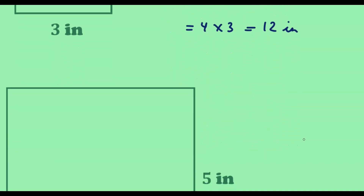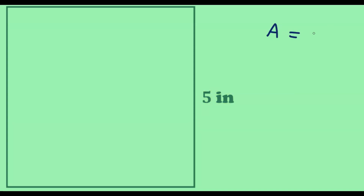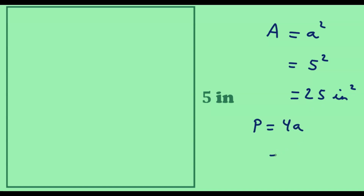Let us have a look at the next square. In this square, we can see that the length of the side is 5 inches. First, let us determine the area, which is A squared. In this case, A equals 5, so we have 5 squared, which equals 25. So the area is 25 square inches. The perimeter is given by 4 times A, so we have 4 times 5, which equals 20. So the perimeter of this square is 20 inches.